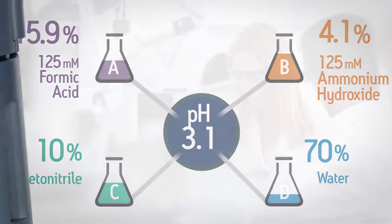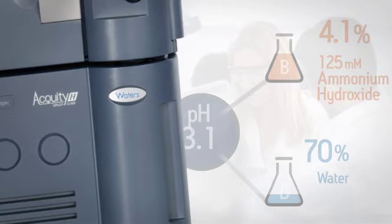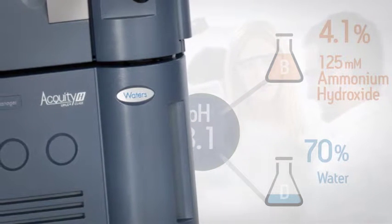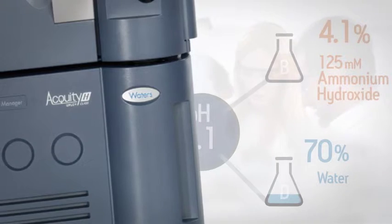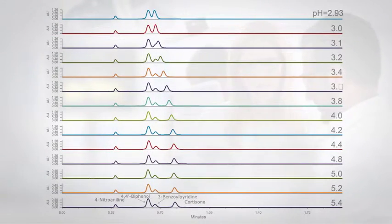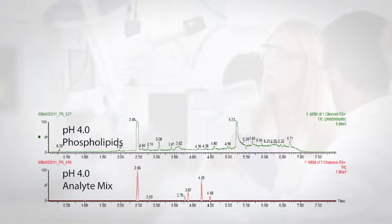So you can take the fullest advantage of your ACQUITY UPLC H-Class or H-Class Bio system. Auto Blend Plus can move peaks further apart for unequivocal identification. It can improve the reliability of quantitation by putting peaks on a flat baseline, and sometimes by putting the small peak first. Adjusting the pH can move analytes away from interferences.